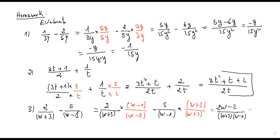You have two times w which is 2w, two times negative one which is negative two, over the factor w plus three times w minus one. Then minus: five times w is 5w, and five times three is positive fifteen. Put parentheses, because every time you have a minus before a fraction, you have to use parentheses, since the minus will change the sign inside.